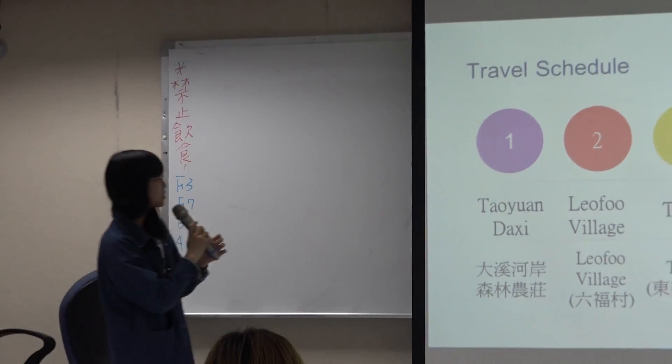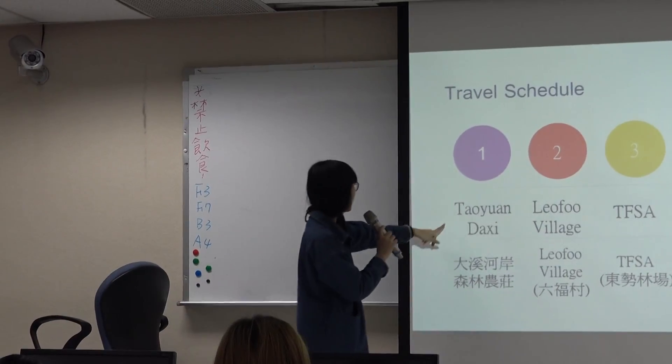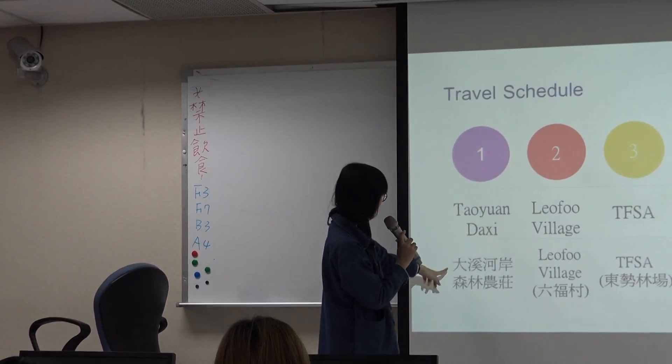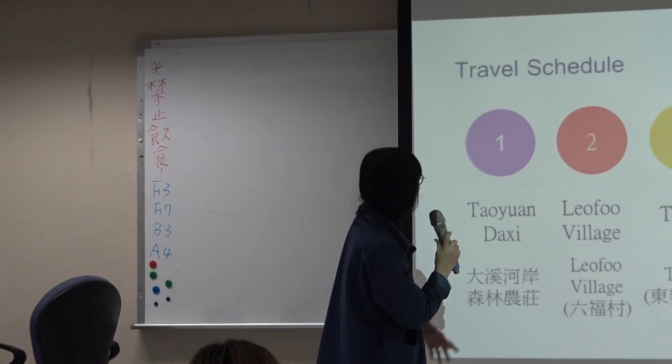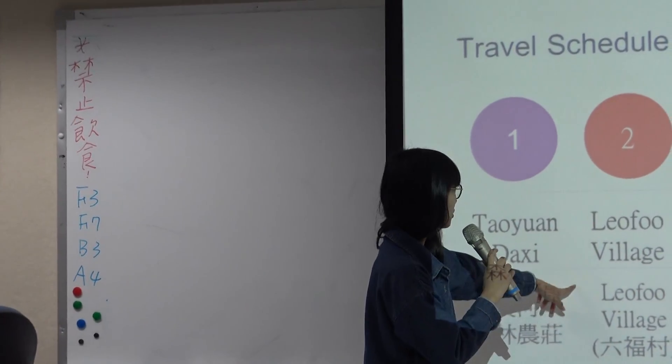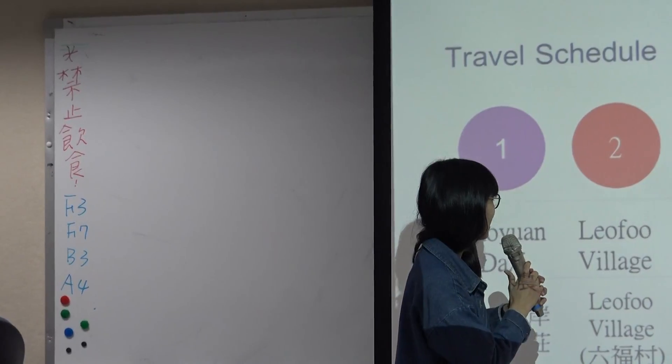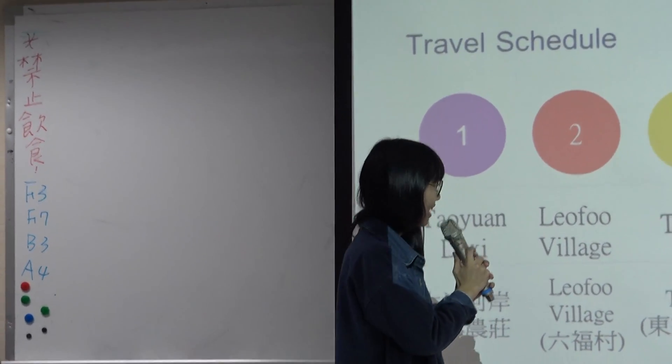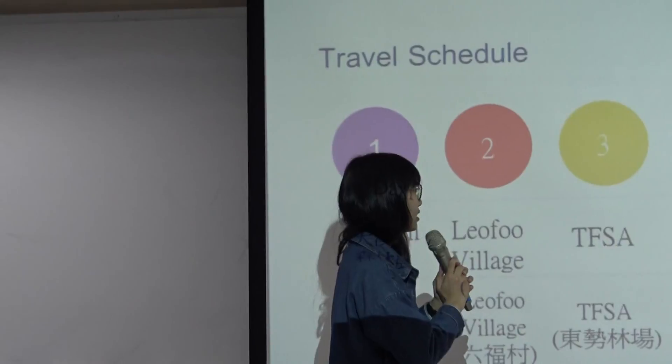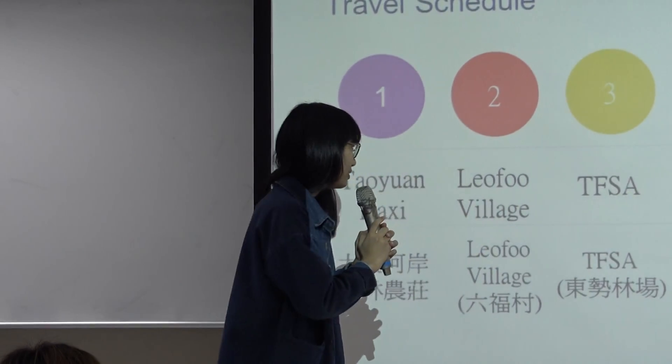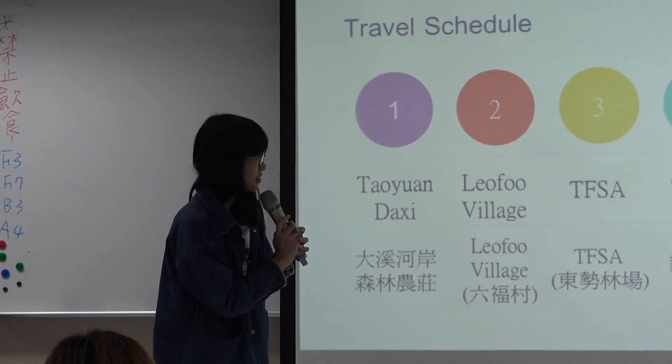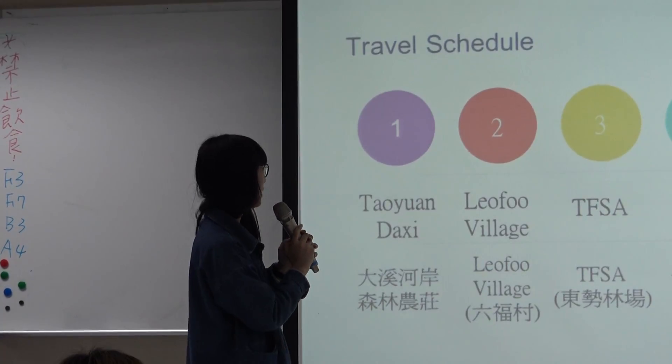This is our travel schedule. First day in Taoyuan Daxi and stay in Daxi. The second day in Leofoo Village and the third day in TFSA Dongshi Limchang. The fourth day in Tainan. The fifth day in NMMBA, the sixth day in Taipei.